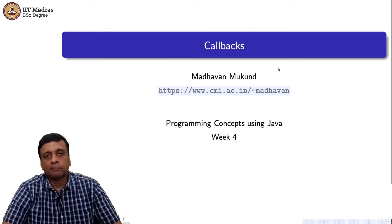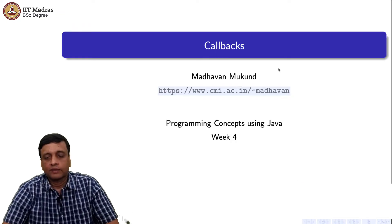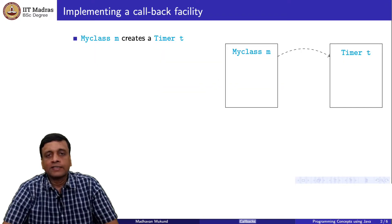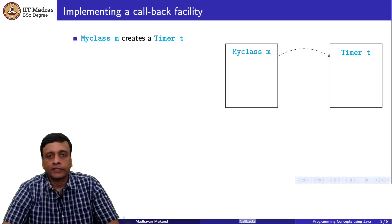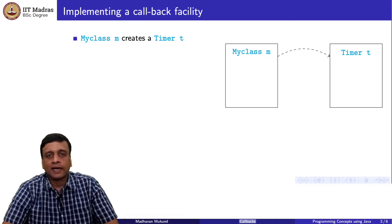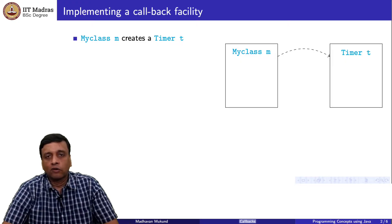Now let us look at another example of using interfaces — this is something called callbacks. When we set a timer in real life, suppose we are doing something in the kitchen and we set a timer: we put the cooker on the gas and say we want to switch it off after 10 minutes. We set a timer for 10 minutes and go about doing whatever we are doing. At the end of 10 minutes we expect the timer to ring or somehow tell us that the time has elapsed so we can get back and switch off the gas. We want to do a similar thing in a Java or object-oriented environment.